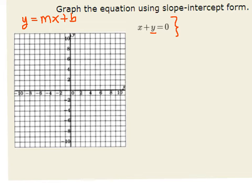So we need to turn this equation into slope-intercept form. We need to solve for y, which involves subtracting x from both sides, and we get y equals negative x.